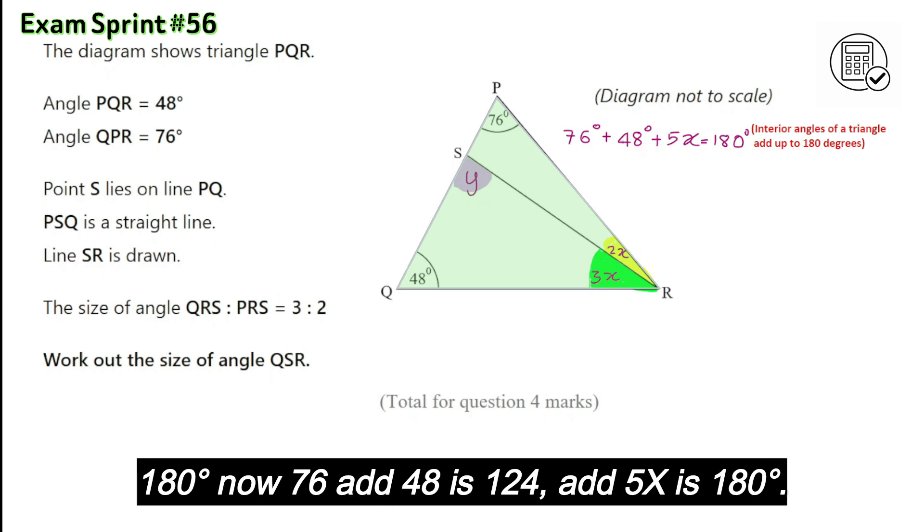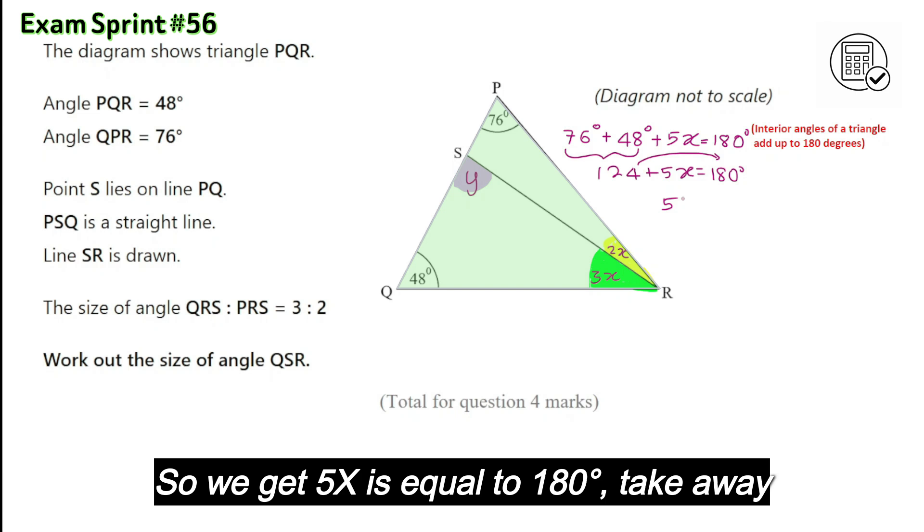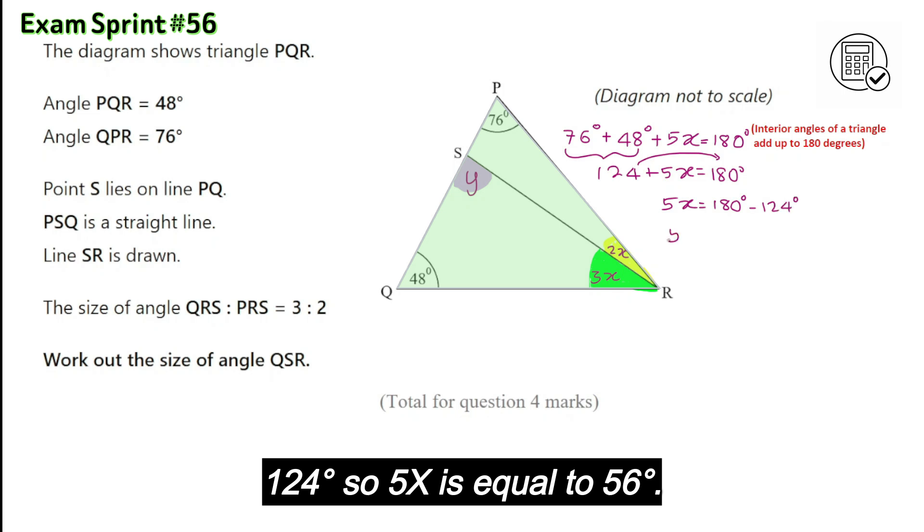76 add 48 is 124. Add 5X is 180 degrees. So we get 5X is equal to 180 degrees take away 124 degrees.